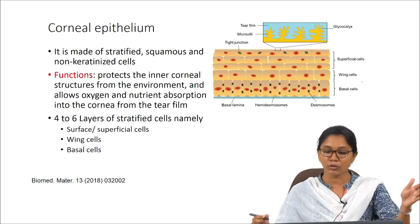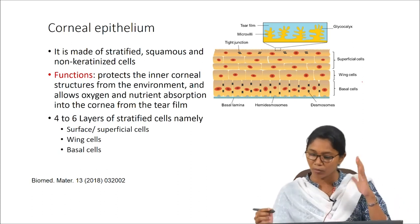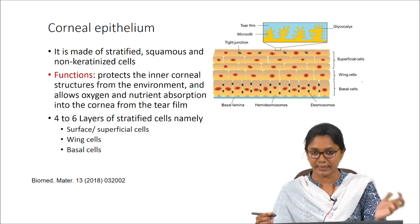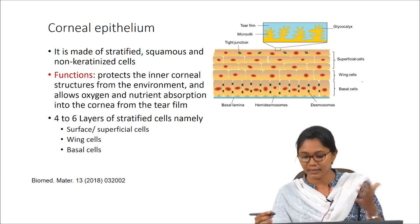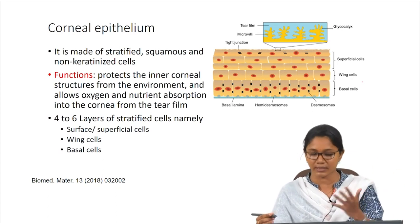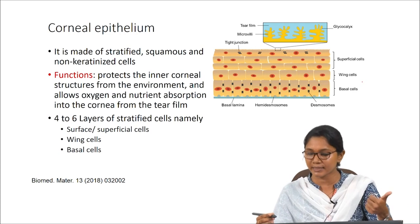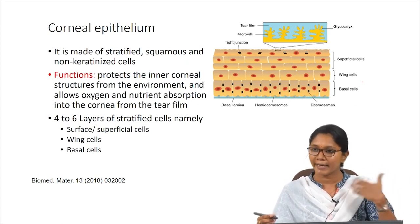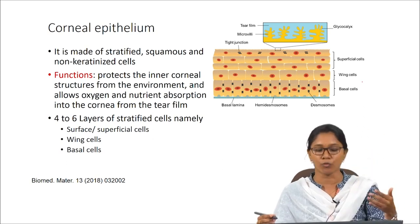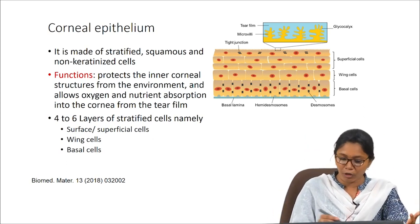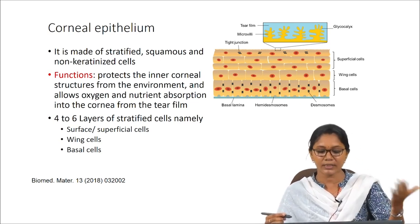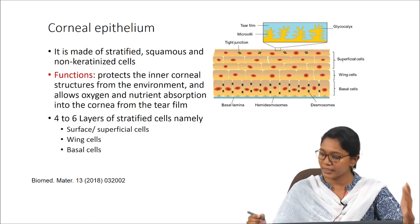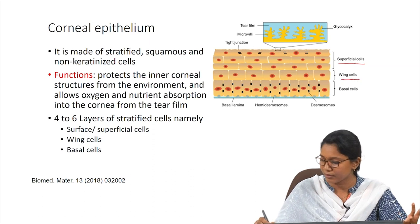The first and outermost layer is the corneal epithelium — a stratified squamous epithelial cell layer. Similar to skin cells, these corneal epithelial cells cover the outer surface, providing mechanical strength and acting as a barrier against microbial infection. It also allows oxygen and nutrient absorption into the cornea from the tear film.